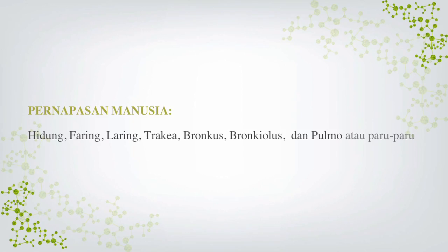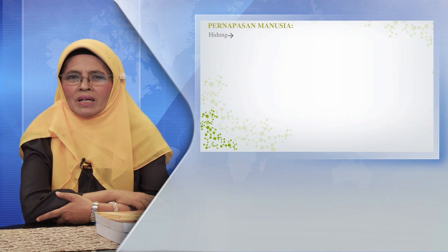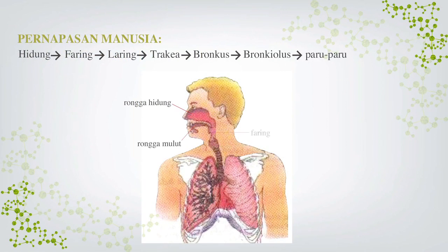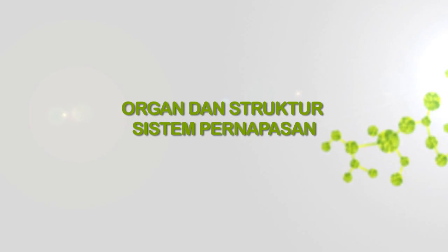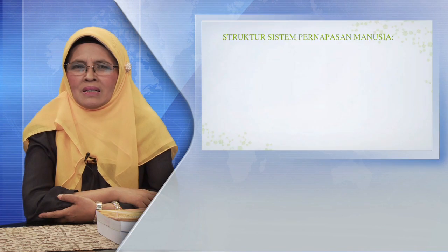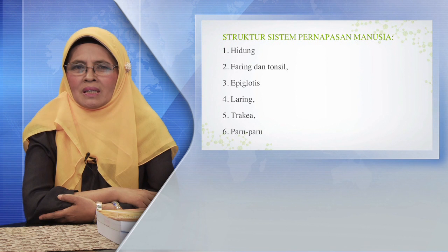Saluran pernapasan secara berurutan dimulai dari hidung, faring, laring, trachea, bronchus, bronchiolus, paru-paru. Untuk lebih jelasnya, perhatikan gambar berikut. Sistem pernapasan manusia terdiri atas beberapa organ yang telah dibahas, seperti hidung, faring, tonsil, laring, epiglottis, trachea, dan paru-paru. Semua itu merupakan organ-organ yang menyusun sistem pernapasan manusia.